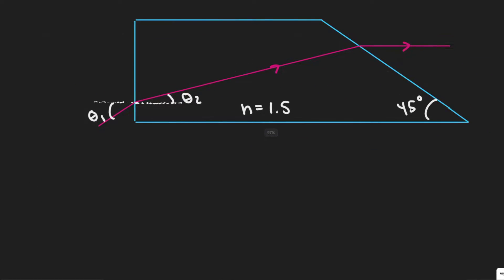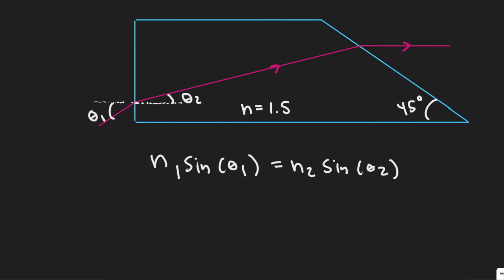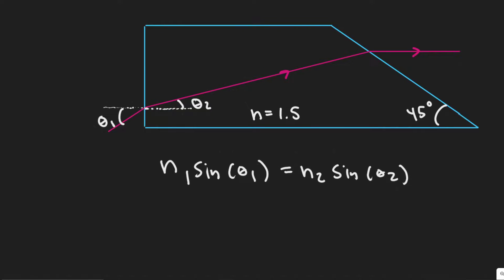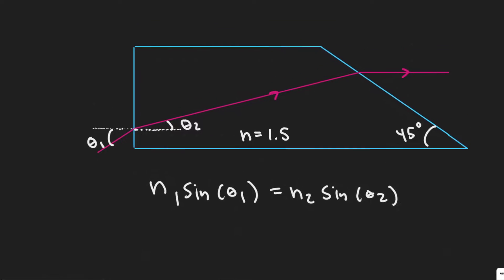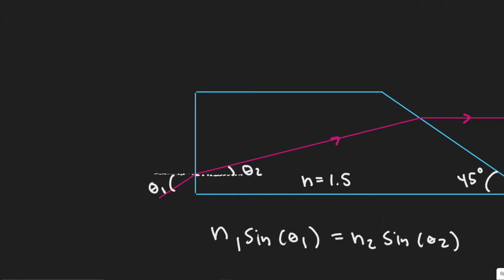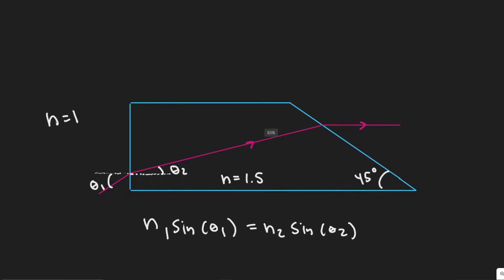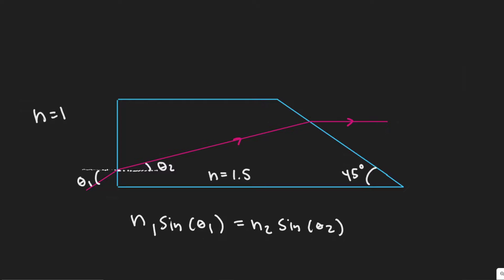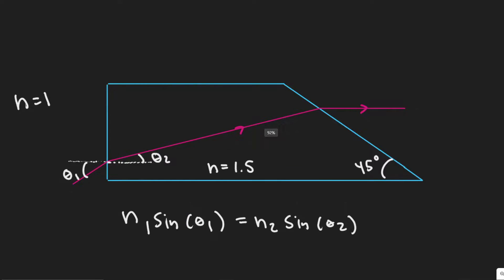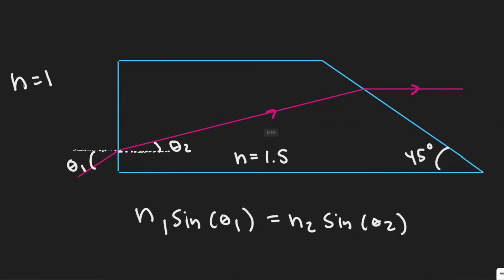So what is Snell's law? Snell's law is n1 times the sine of theta 1 equals n2 sine of theta 2. Keep in mind n is the index of refraction. On the outside it's just air, so n equals 1 out here, and on the inside it's n equals 1.5. Theta represents your angle of incidence or angle of refraction. What we're trying to find is the angle of incidence where the ray enters.